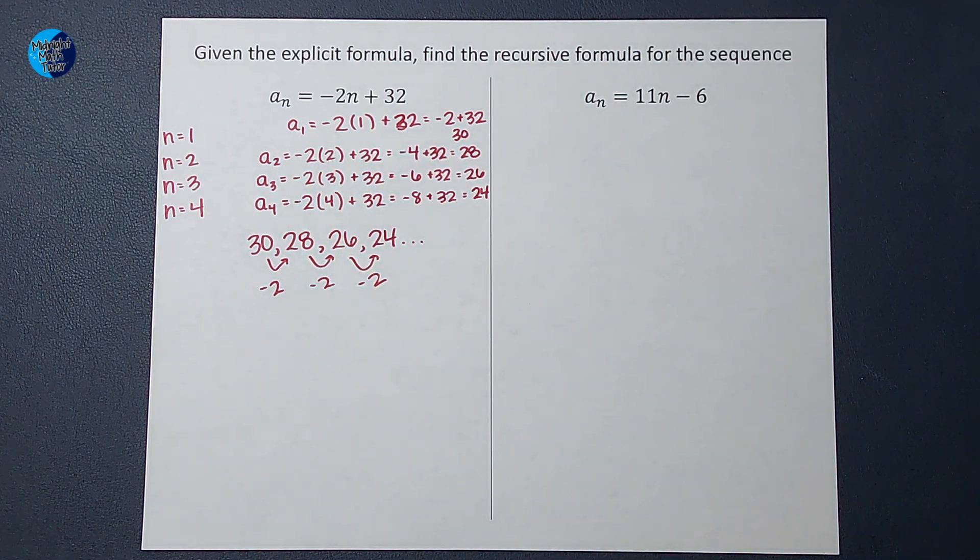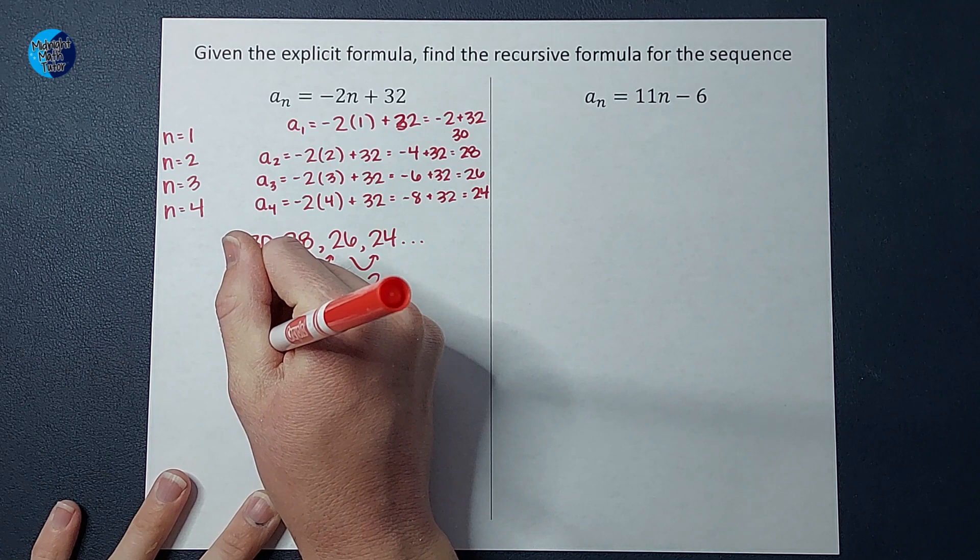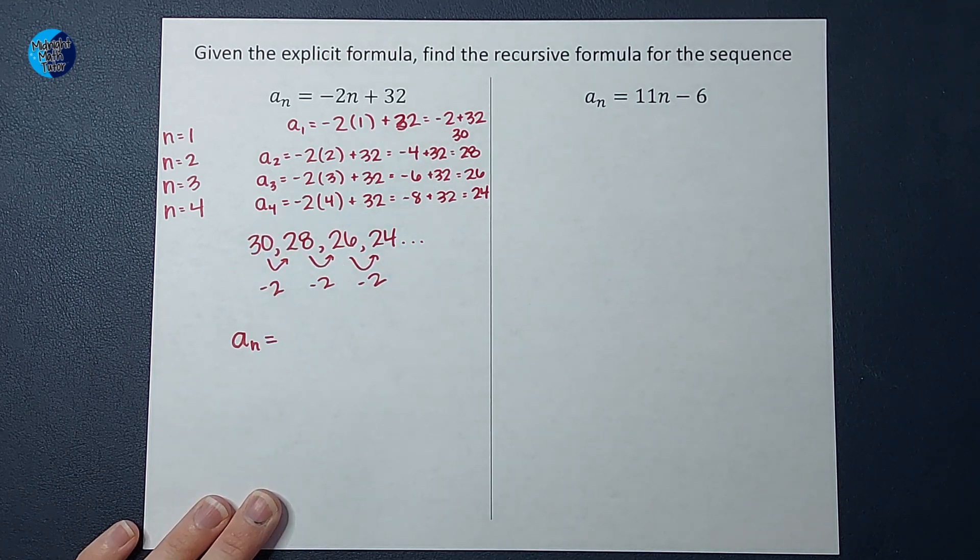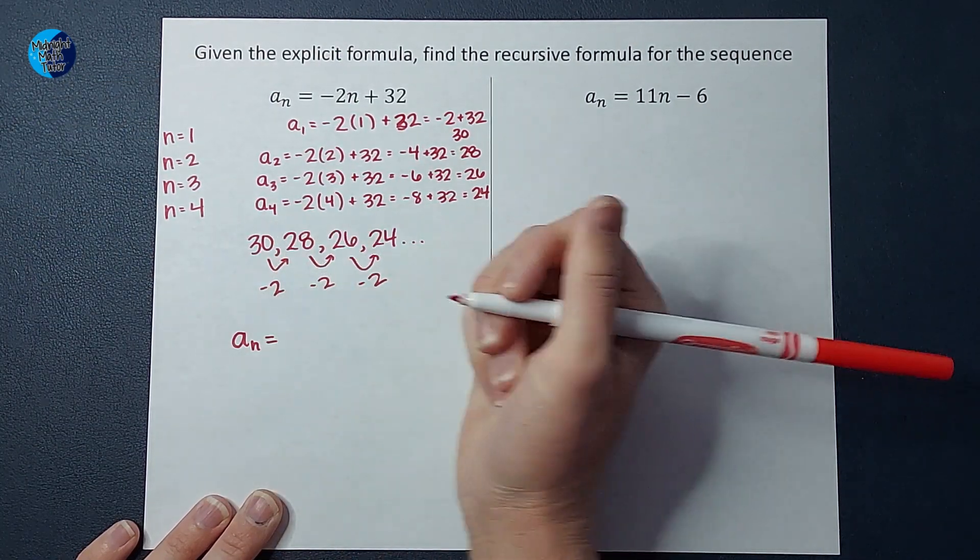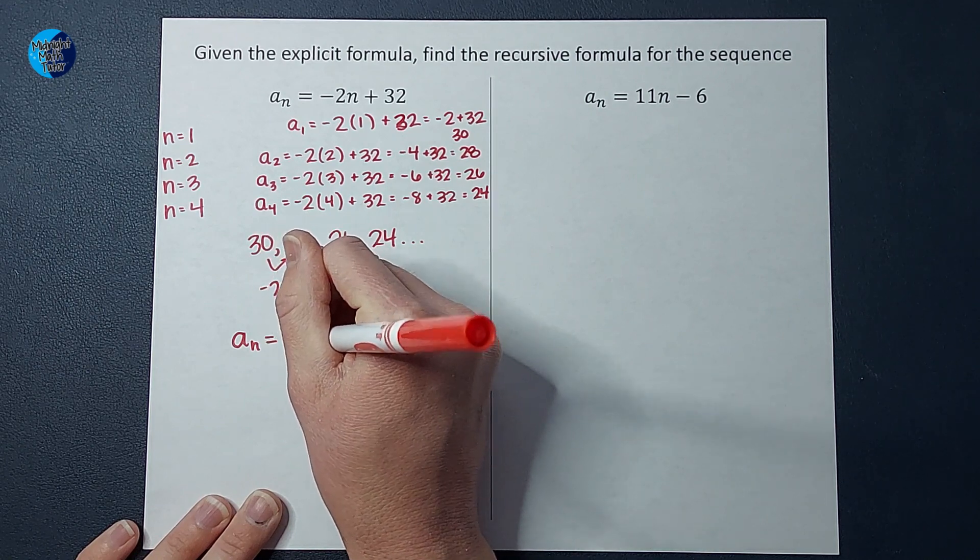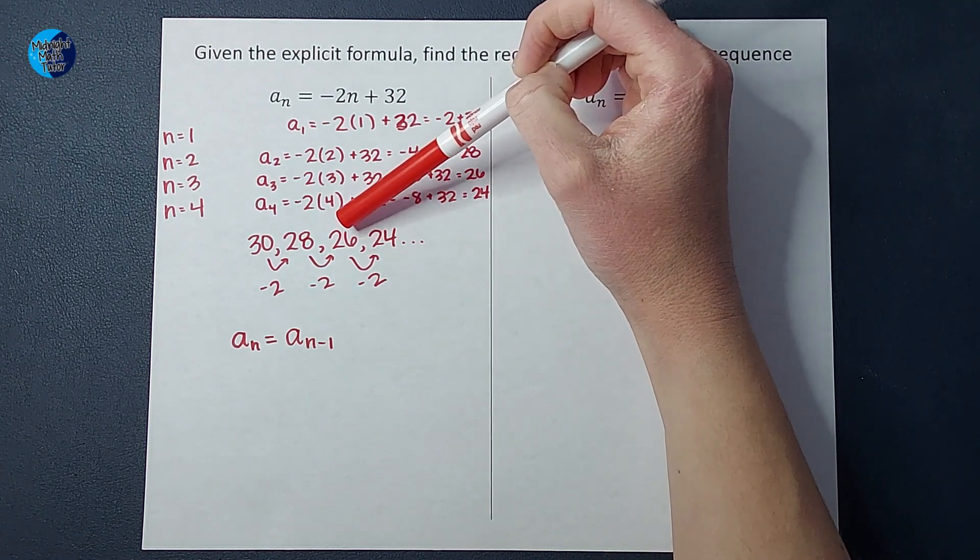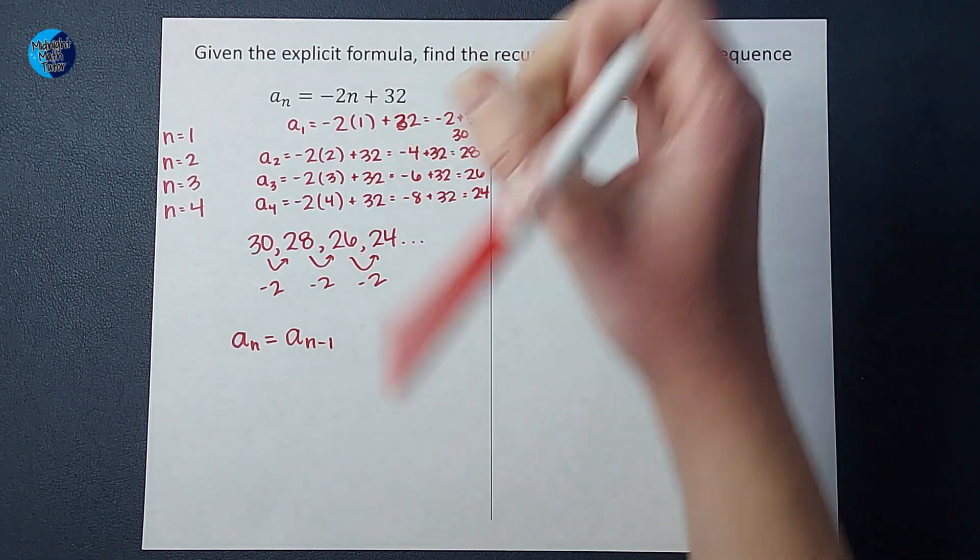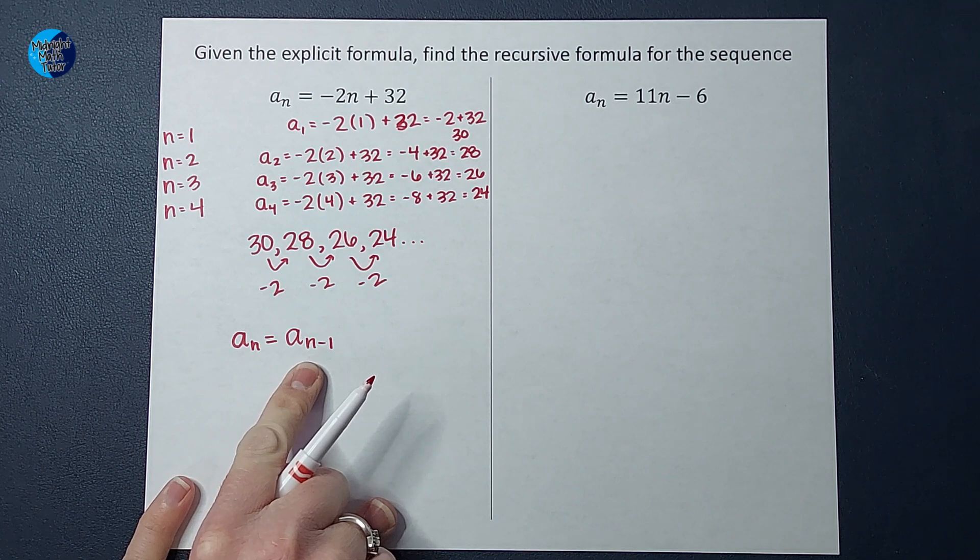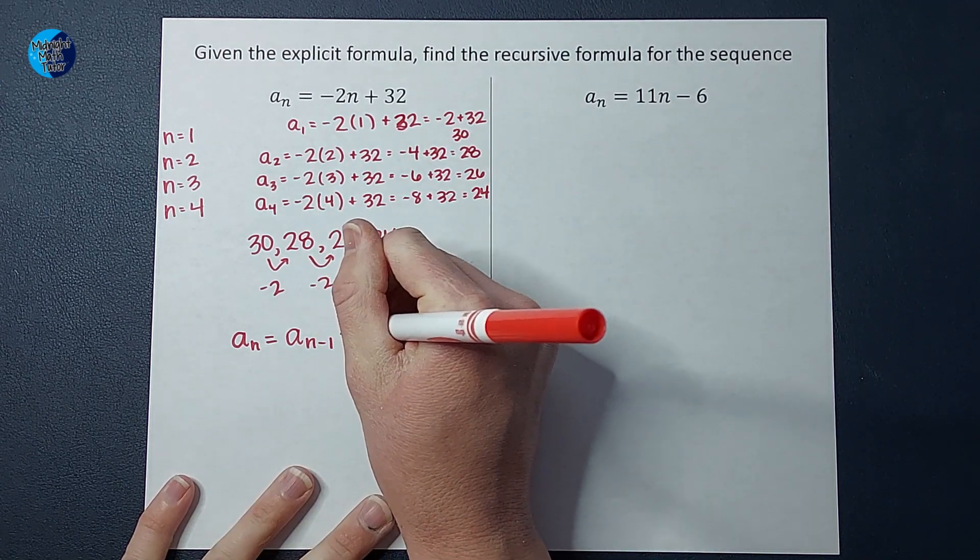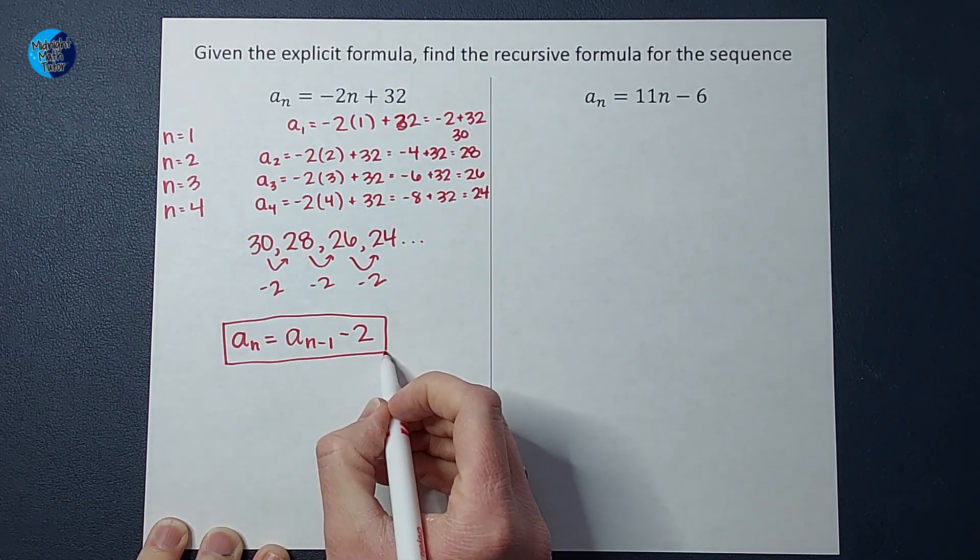So my recursive formula is going to be a sub n, meaning whatever number you want to find. You take the number before that one, right? Which, how do I write that in math language? I write it as a sub n minus one. Meaning if you want to know the fourth term, you need to know the third, right? And subtract two from it. That's where the a sub n minus one comes in. So whatever one you want to find, take the one before it. And in this case, we are subtracting two.